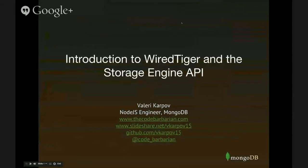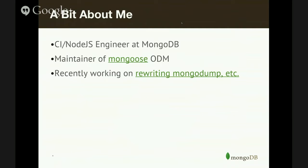What I'm going to be talking about today is the WiredTiger storage engine and the storage engine API in general — what it's all about and why it's such an exciting part of MongoDB 3.0, enough that we decided to skip 2.8 entirely and go to 3.0. A quick bit about me: I do continuous integration and Node.js at MongoDB. I maintain the MongoDB Node.js driver, and recently I've been working on rewriting MongoDump and MongoRestore — all the tools shipped with MongoDB — in Go, which Bill can tell you a lot about at his blog.